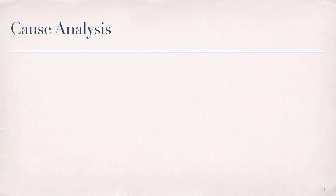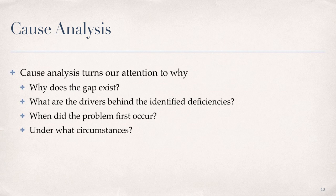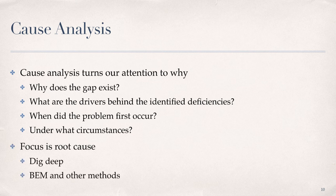And cause analysis represents the transition point in performance analysis as we prepare to consider interventions. The previous steps provide the what in terms of performance gap identification. In cause analysis, we direct our attention to causation to determine the why, as far as why the gap or gaps exist. And we do this by asking, why does the gap exist? What are the drivers behind these identified deficiencies in performance? When did the problem first occur? And under what circumstances does the gap exist? The focus of gap analysis is on determining the root cause for each gap in performance. This requires us to dig deep by considering environmental and individual domains of performance, looking at information, instrumentation, and motivation among each of those domains.